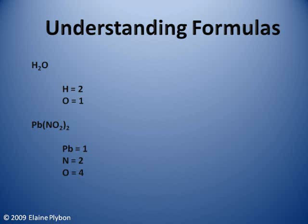Let's look at the next formula: PbNO2 subscript 2. We have one Pb, or lead, two nitrogens, and four oxygens. We know there is only one lead because there is no subscript following it, nor are there any coefficients preceding it. How do we know there are two nitrogens? Because NO2 is in parentheses and is followed by a subscript of 2. This means that everything inside the parentheses should be doubled. There are two oxygens inside the parentheses, so there are a total of four oxygens in the compound.